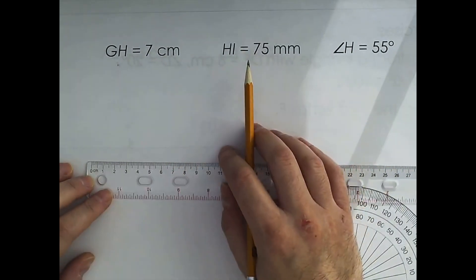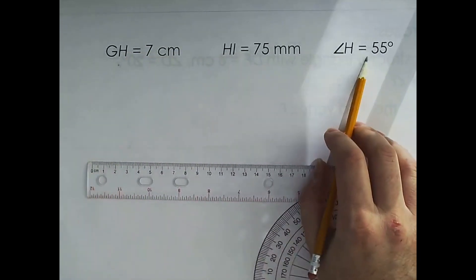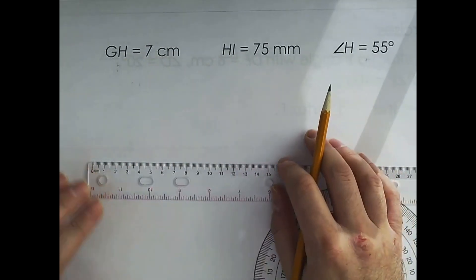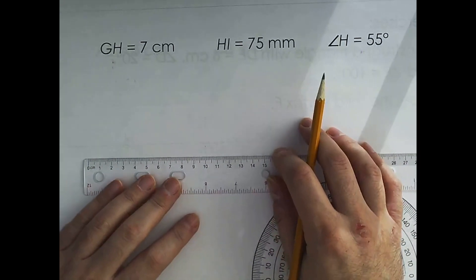Your first step in this situation, don't follow it in order by the way. I'm going to draw GH first, and GH has to be 7 centimeters.